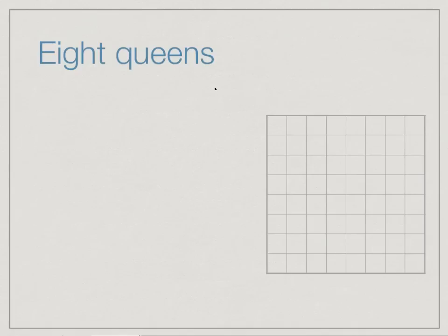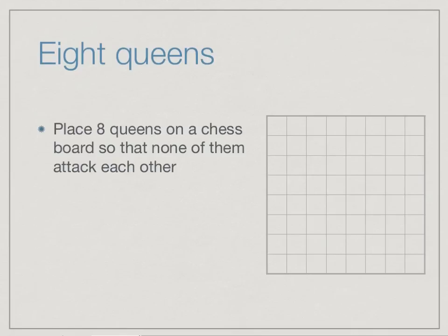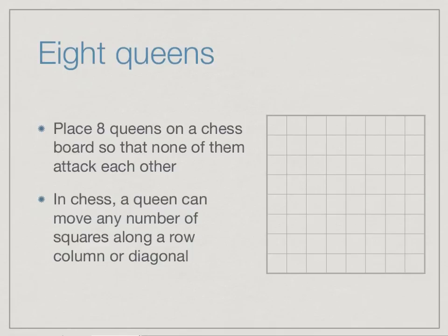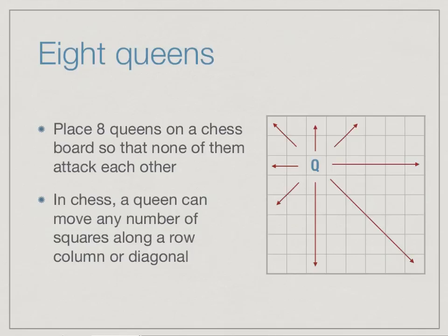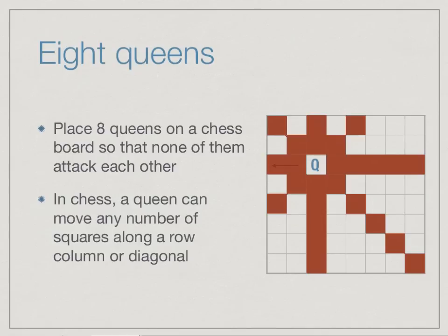Imagine, for instance, if you are solving a Sudoku. You have a grid and you start filling things up, and at some point you realize there's nothing you can put in a particular cell, so you go back and change something you did before. We have to backtrack — go forwards trying to solve the problem, and when we realize we are stuck, go back and change something and try something else. One classic problem of this kind is called the Eight Queens problem.